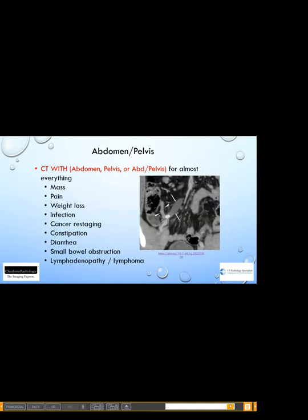Moving on to the abdomen and pelvis: the workhorse is a CT with contrast for almost every indication — mass, pain, weight loss, cancer, lymphoma, everything. In this example, zoomed into the right lower quadrant, you can see the cecum to the left of the screen and a tubular appendix coming off it — it is dilated with a rounded appendicolith inside. This is appendicitis. You can see the enhancing wall of the appendix and surrounding inflammation, all better appreciated with contrast.